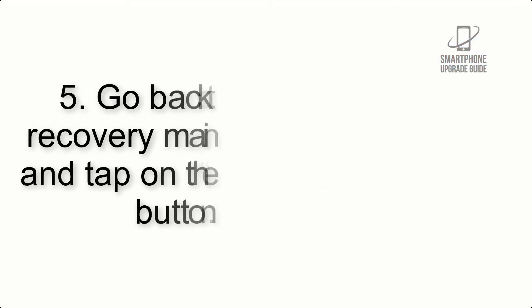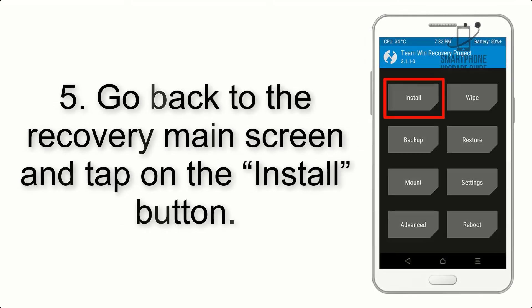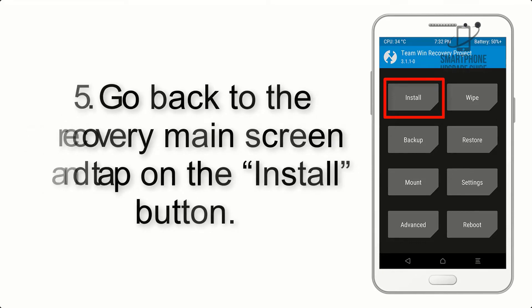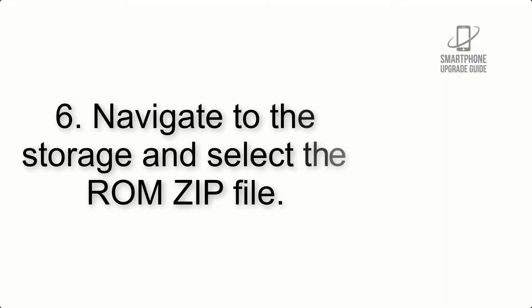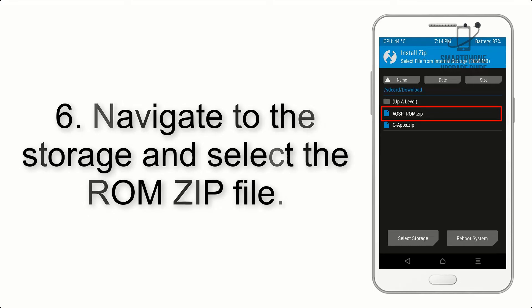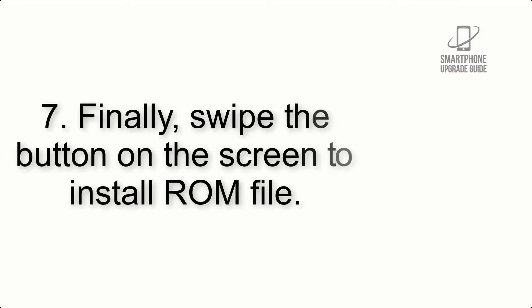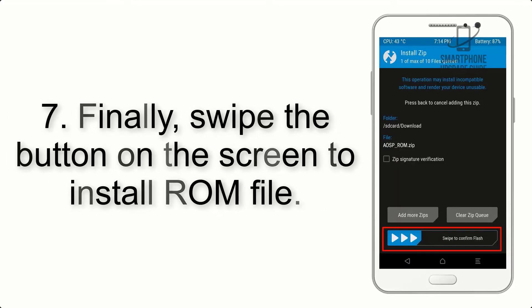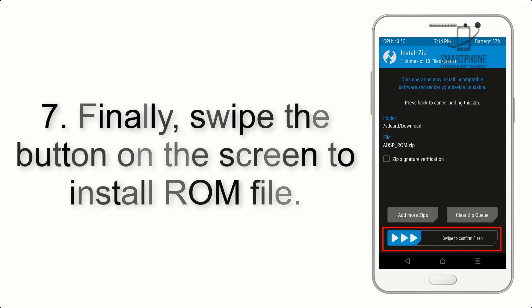Step 5: Go back to the recovery main screen and tap on the Install button. Step 6: Navigate to the storage and select the ROM zip file. Step 7: Finally, swipe the button on the screen to install the ROM file.